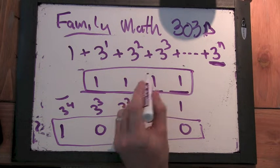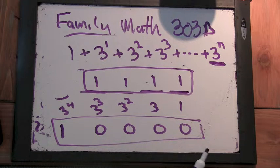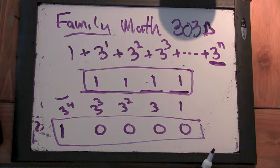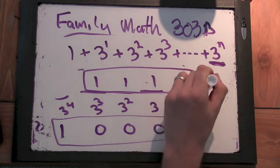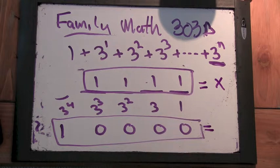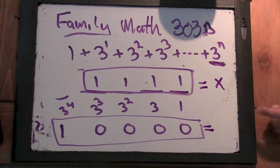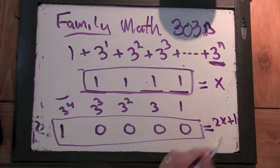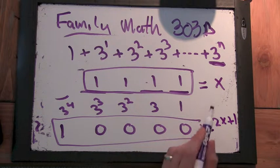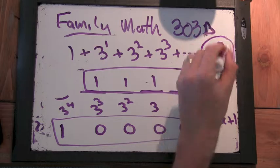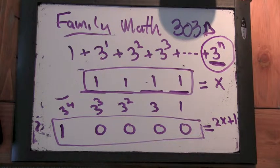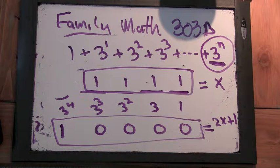So what power of 3 is the next power of 3? 3 to the 4th. Okay. So that would be this number 1, 0, 0, 0, 0. Right? Yeah. And if you add 2 to this, to the 1, 1, 1, 1, base 3, you'd get the 1, 0, 0, 0, 0, base 4. I mean base 3.